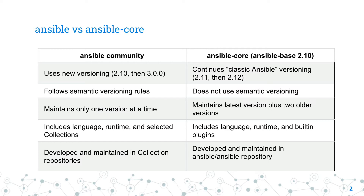Ansible Community Package Release Cycle: The Ansible Community Team typically releases two major versions of the community package per year, on a flexible release cycle that traces the release of Ansible Core. This cycle can be extended to allow for larger changes to be promptly implemented and tested before a new release is made available. See the Ansible roadmap for upcoming release details. Between two major versions, the Ansible Team releases new minor versions of the Ansible Community Package.